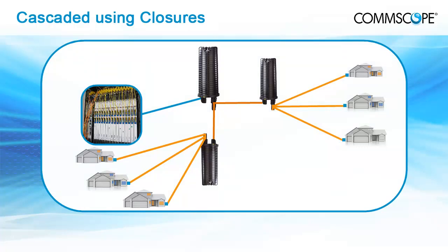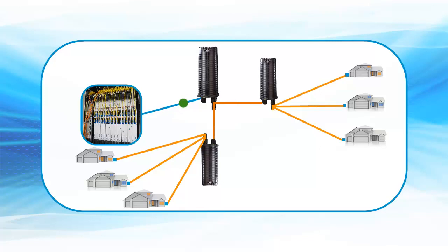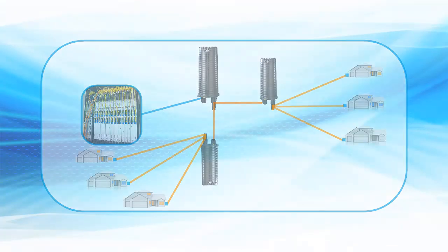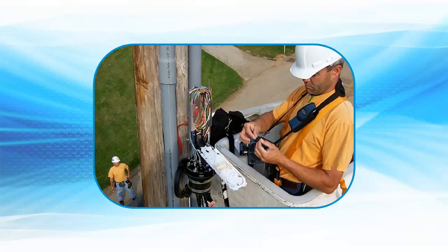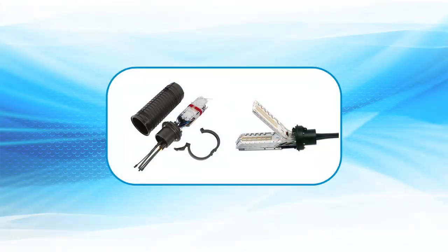In a cascaded architecture using splice closures from the central office, the feeder fiber enters the closure and passes through the first splitter. The output fibers then feed into smaller closures or fiber access terminals that are closer to the customer. At each smaller closure, a distribution fiber enters another splitter, and drop cables from each customer premise are connected to the outputs of these splitters to complete the network connections. The feeder fibers are spliced to the splitter inputs, and the distribution fibers are spliced to the splitter outputs. In the fiber access terminals, pre-connected adapters on the splitter outputs allow fast connections with pre-connectorized drop cables. This half-spliced, half-connectorized installation accounts for the majority of today's cascaded networks.